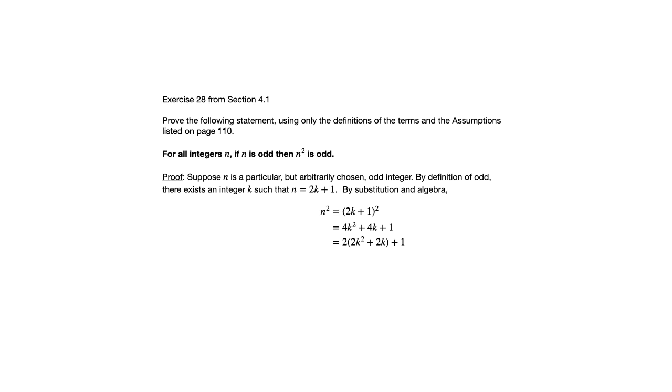But we're not quite finished yet. Because in order to conclude that n squared is odd, we need to know that that expression in parentheses, the 2k² + 2k, is an integer. Because the definition of odd says that it's of the form 2 times an integer plus 1.